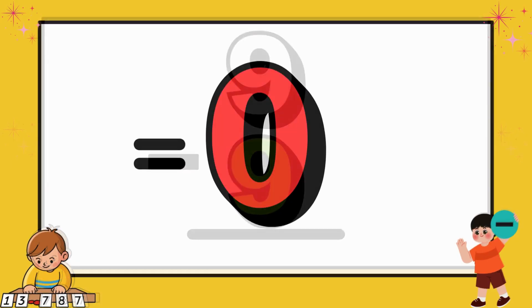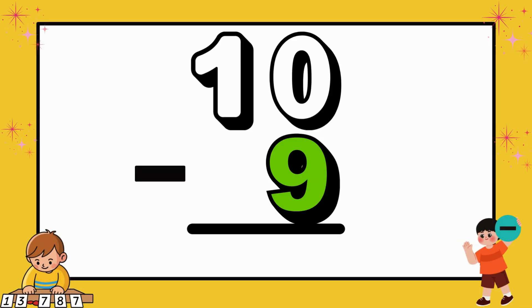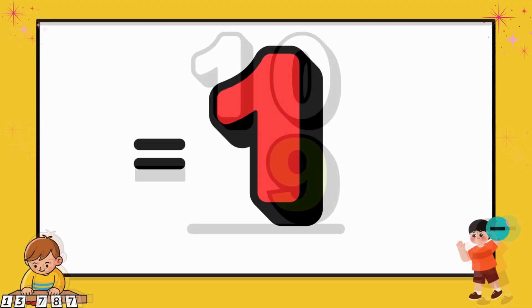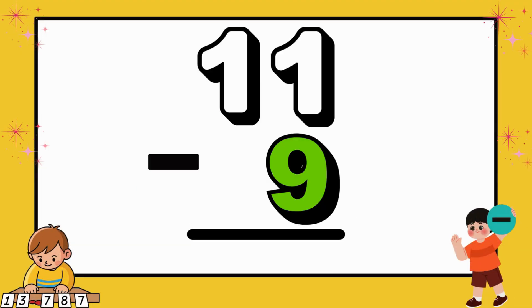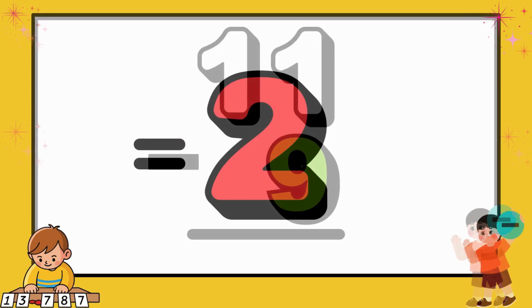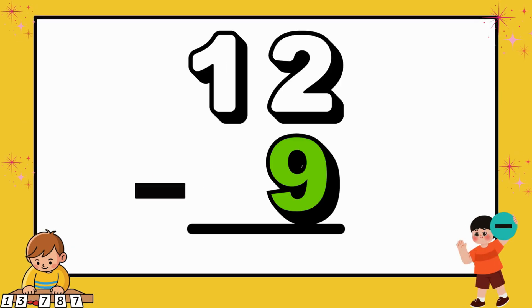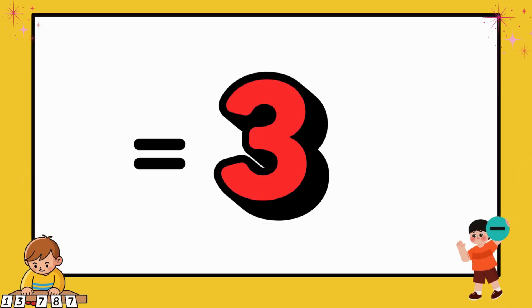Now, let's do it again. Let's go! First, 9 minus 9 equals 0. Next, 10 minus 9 equals 1. Then, 11 minus 9 equals 2. After that, 12 minus 9 equals 3.